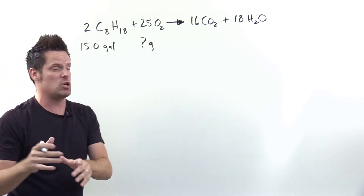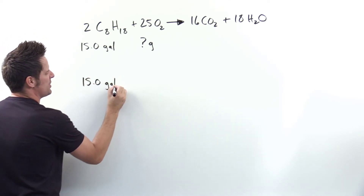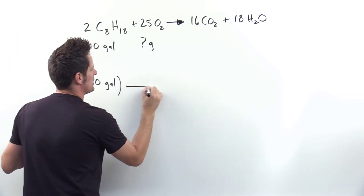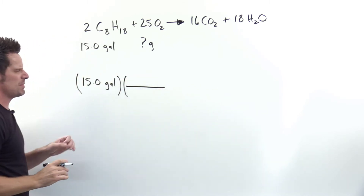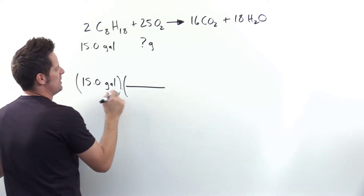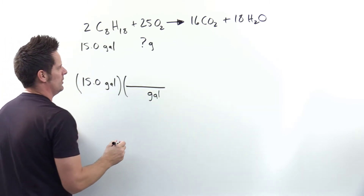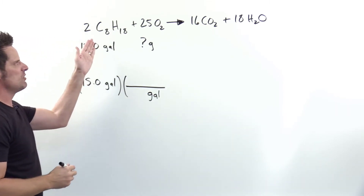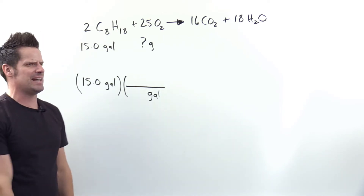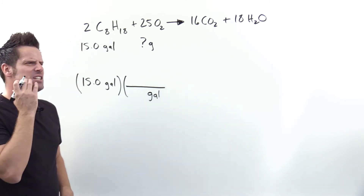Using dimensional analysis, I write down 15.0 gallons (abbreviated GAL). I want to eventually get to grams of O2. I put the same units in the denominator as in the numerator of the previous term — gallons. Can I directly relate gallons to grams of another substance? No. What can I relate gallons to? Gallons is a volume — I can directly relate it to liters. The reason: the problem gives me a density of octane in grams per milliliter, and liters is getting close to milliliters.